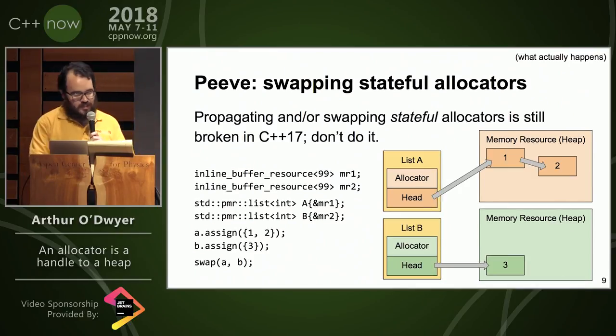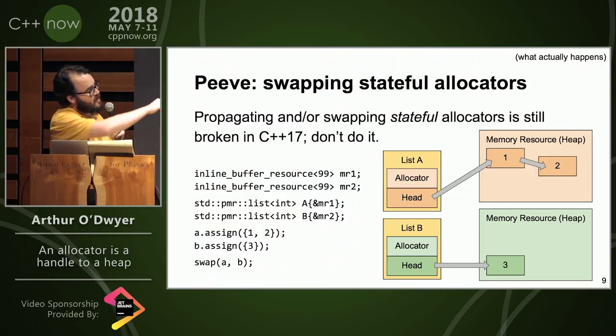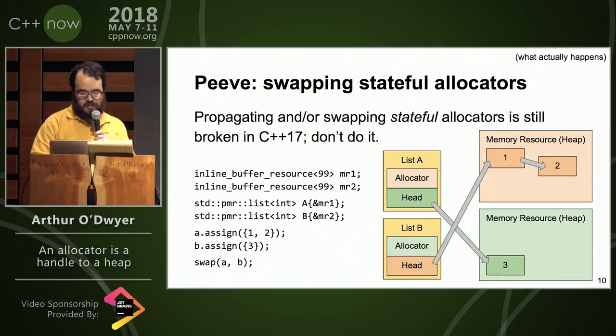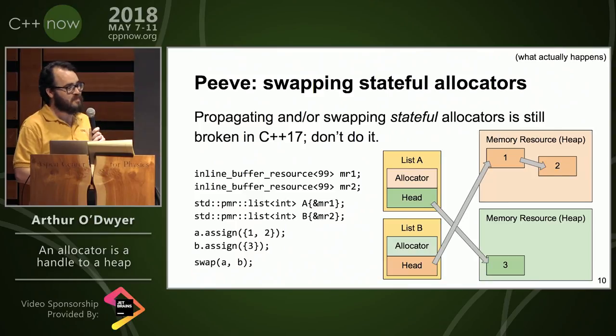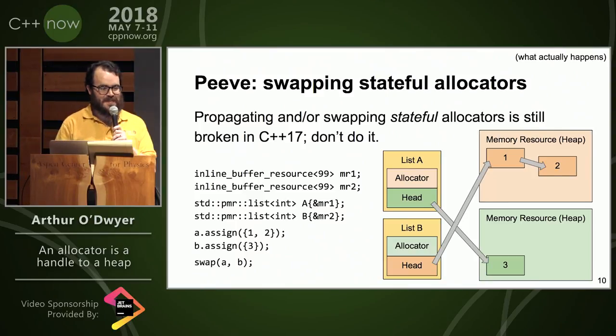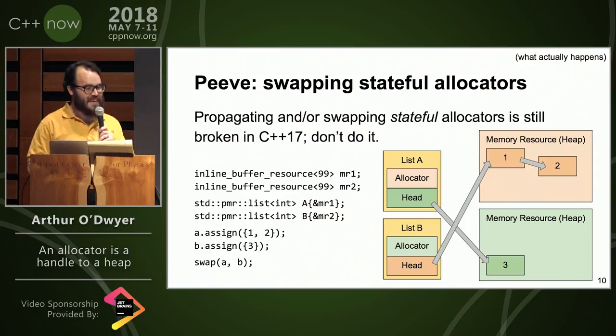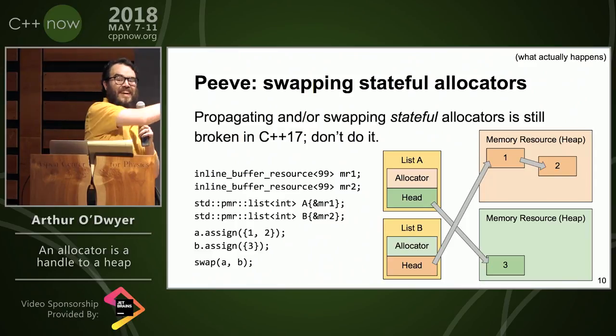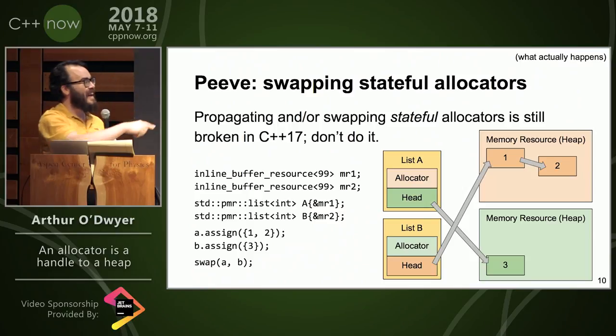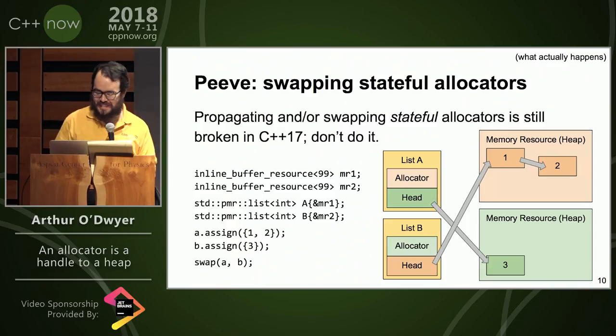What actually happens is here we have the list of one and two in the red heap and three in the green heap. And every library will do this. What happens is undefined behavior. What's supposed to happen is undefined. What does happen is this. It's going to do this, and then you're going to go to deallocate and it's going to blow up. So just be aware, that's all.